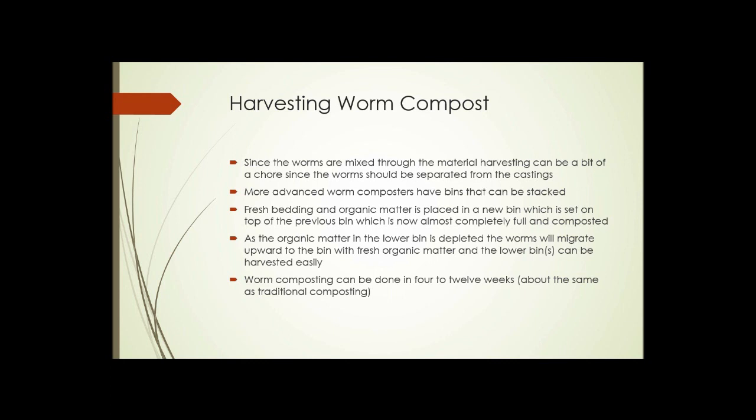So how do you harvest this worm compost? Well, since the worms are mixed throughout the material, the harvesting can be a little bit of a chore, since the worms should be separated from the castings. You don't want to get rid of all your worms as you're taking the castings out to use on a garden. So some more advanced, commercially available worm composters have bins that can be stacked. You start with the bottom bin, which sits over a waterproof container, add the bedding material, add the worms, add the organic material, and the worms will start consuming that material. You can add more bedding and more organic matter until you're close to the top of the tray. Then you put a second tray on top, add bedding and organic matter to that, and the worms will migrate up into the bin with fresh bedding and fresh organic matter and start working on that.